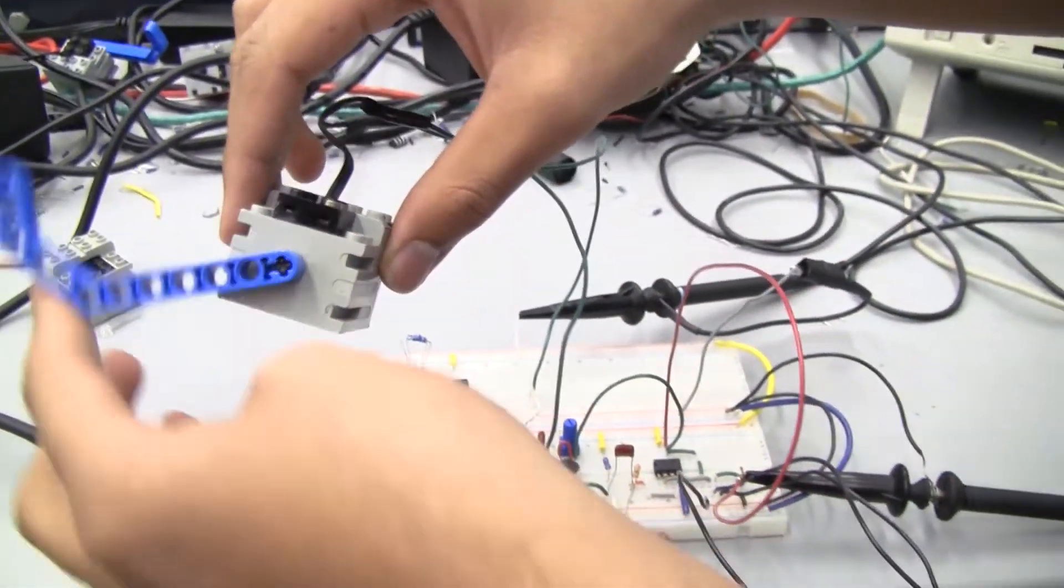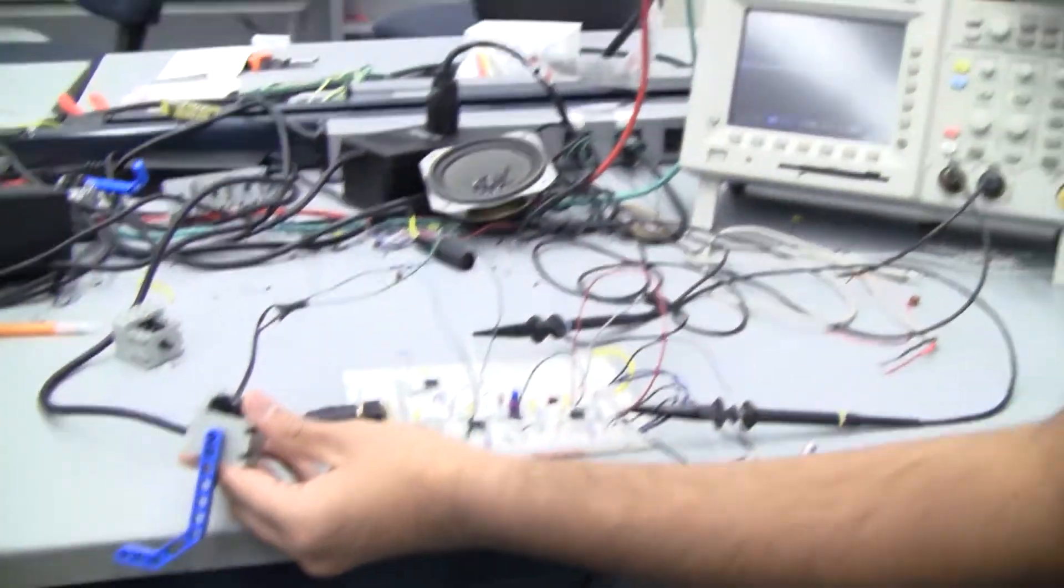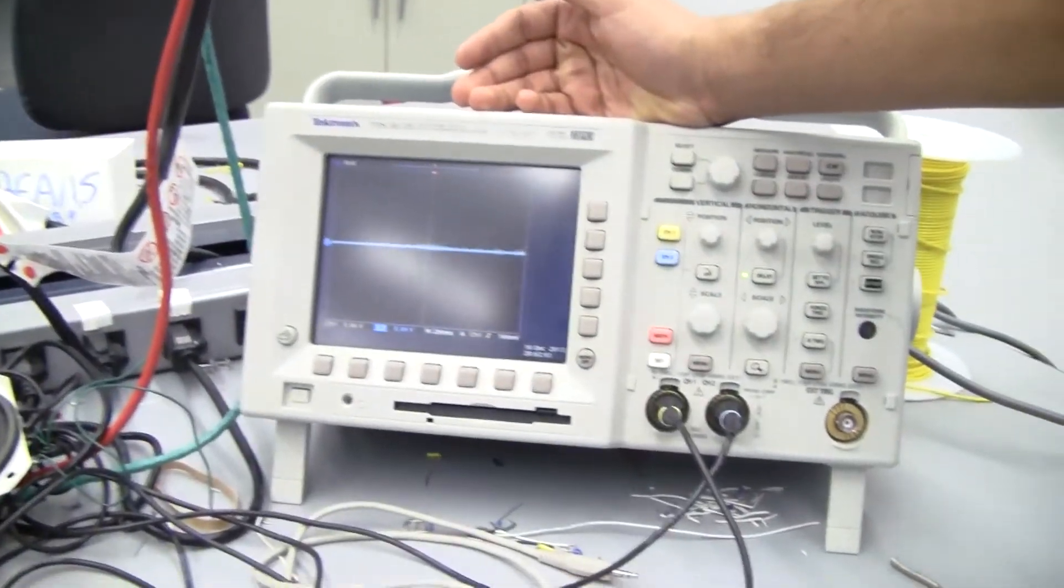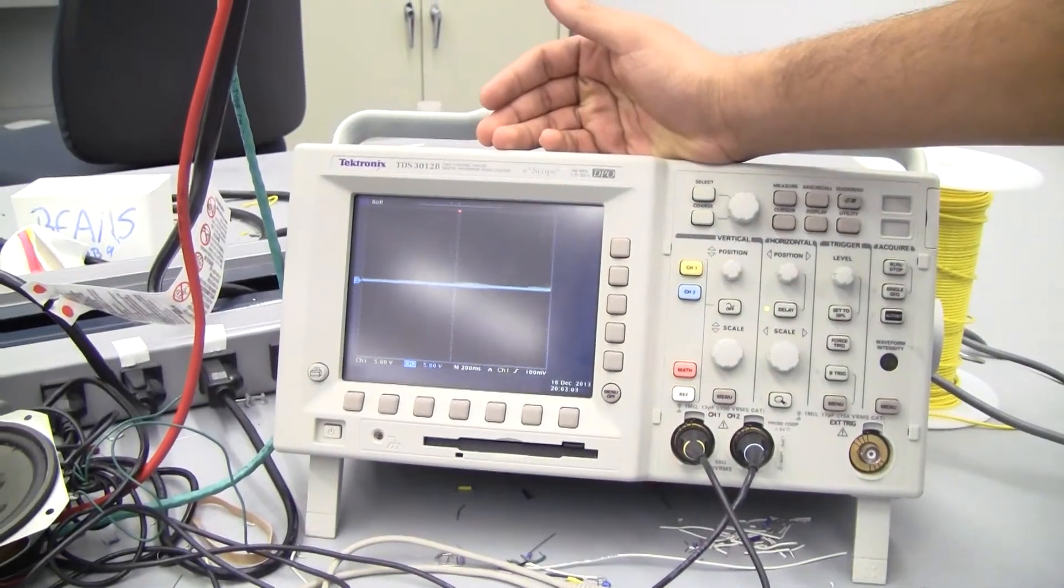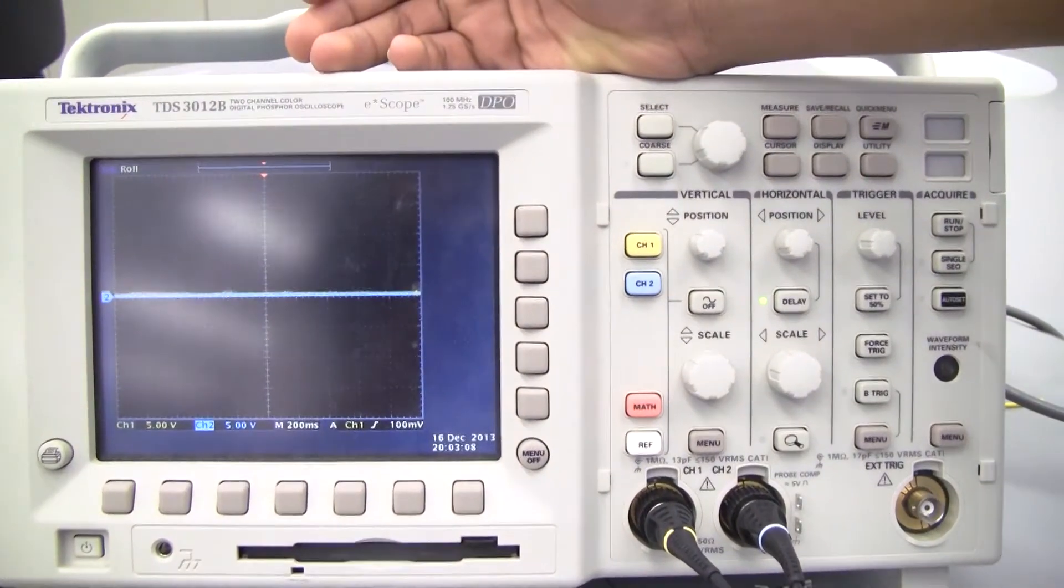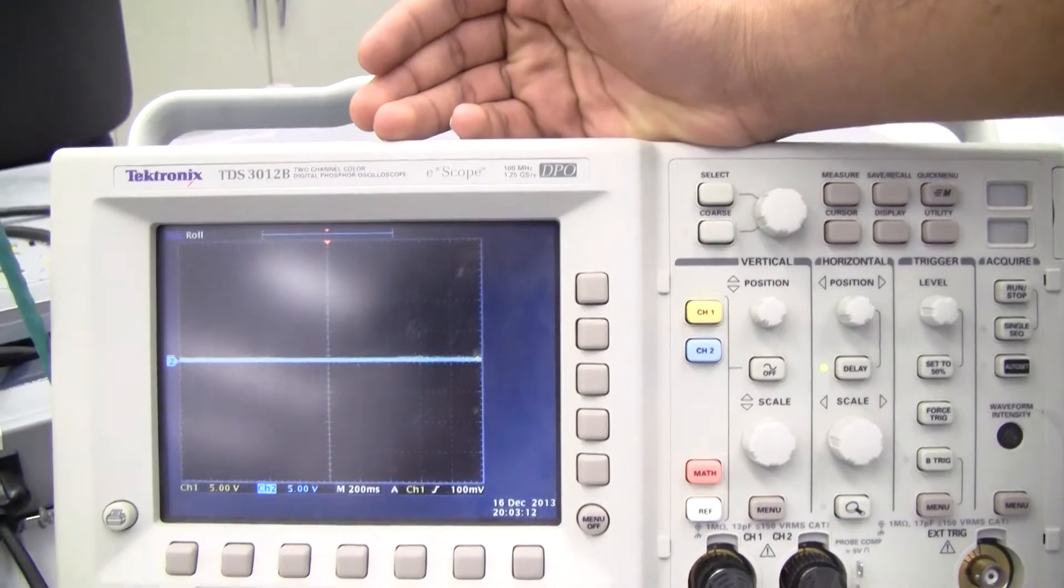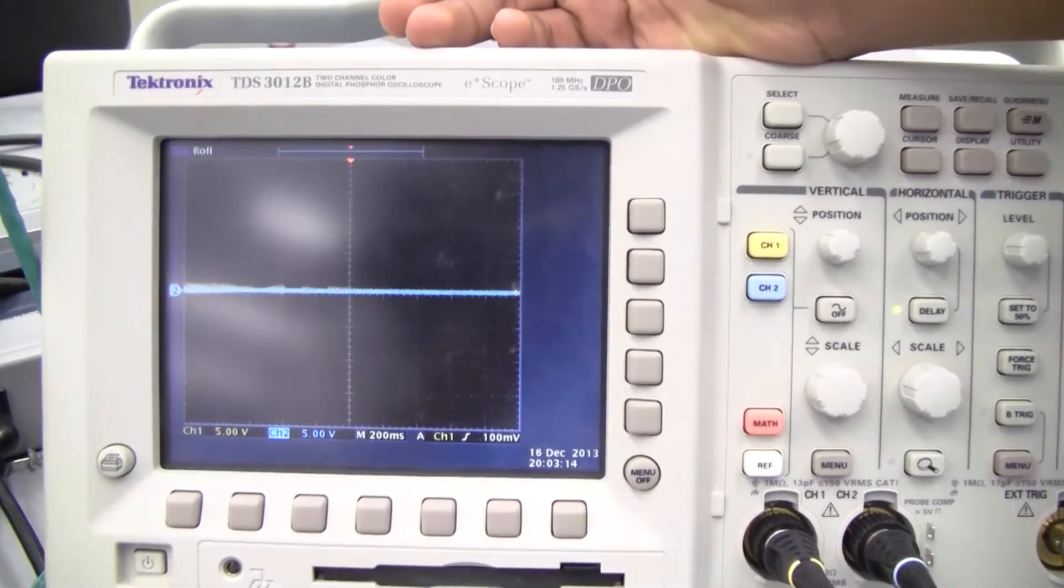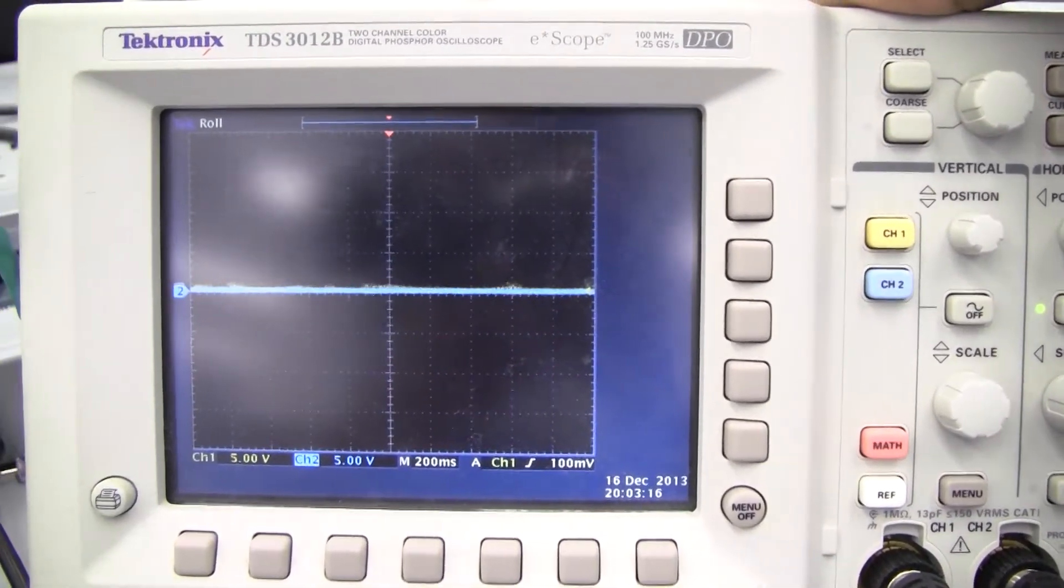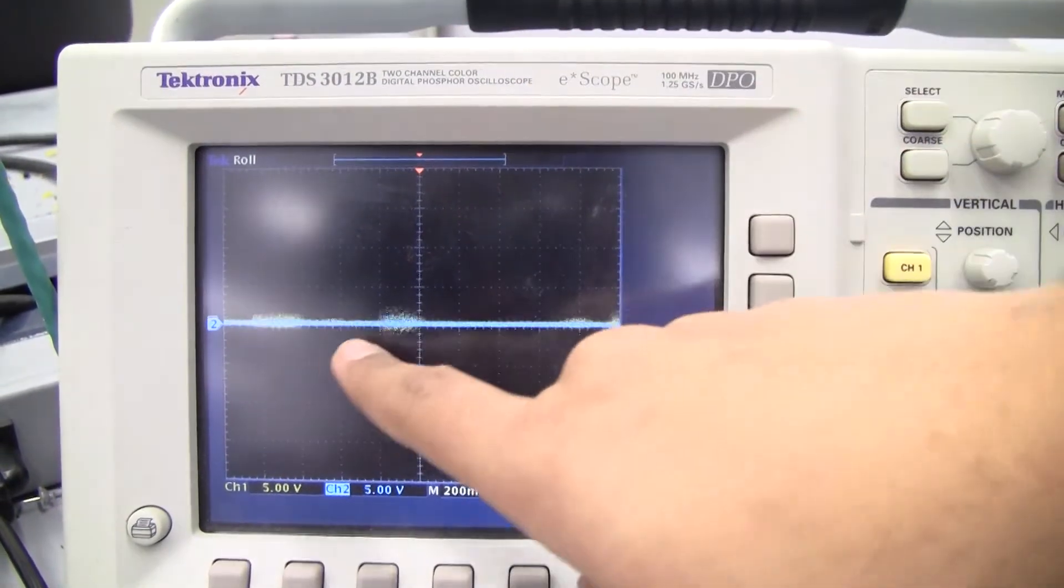On the oscilloscope we have the blue line representing the voltage after the diode, after the rectifier. This is essentially what the motor is reading. The yellow represents the simple amplified microphone output. As you can see as we talk we are getting some signal here.